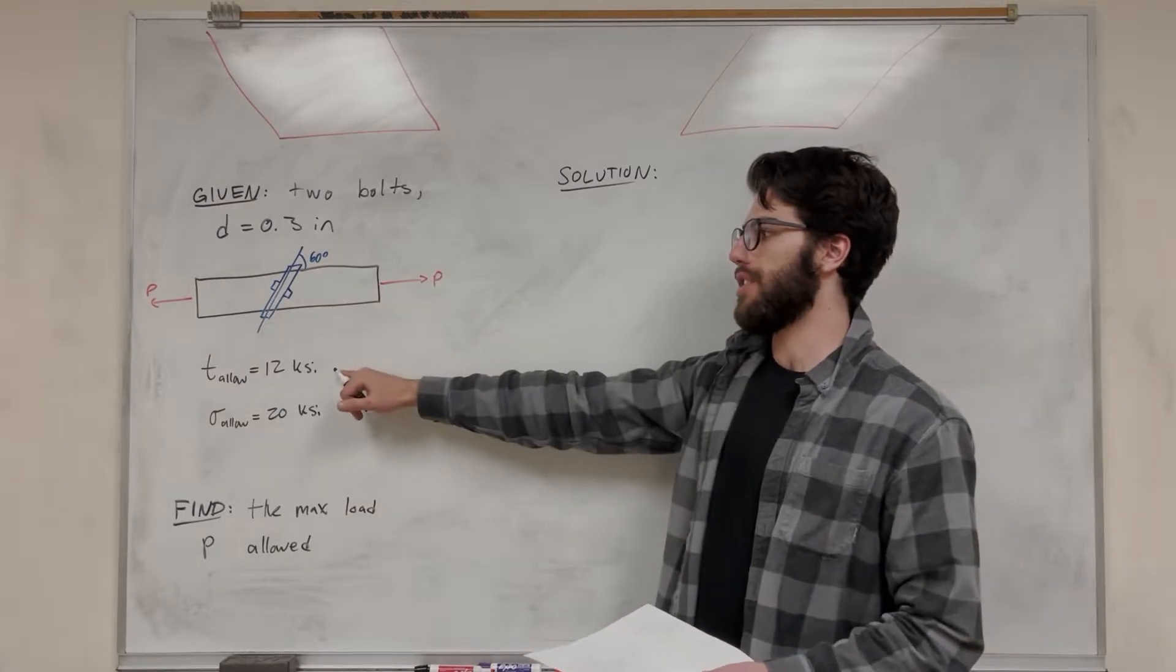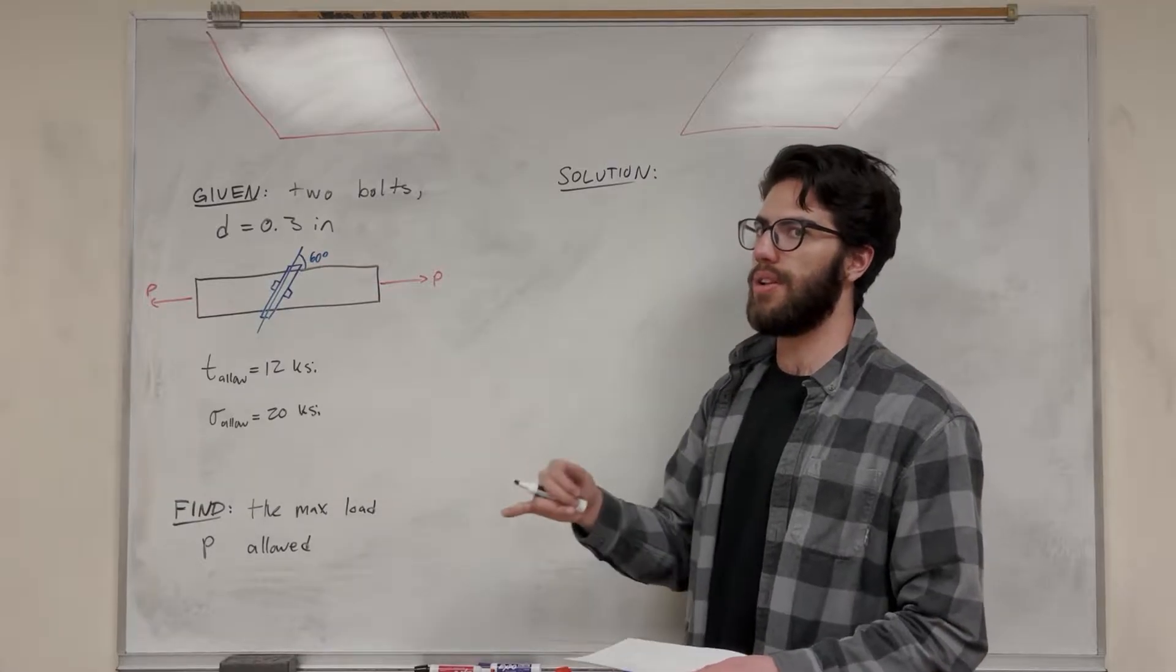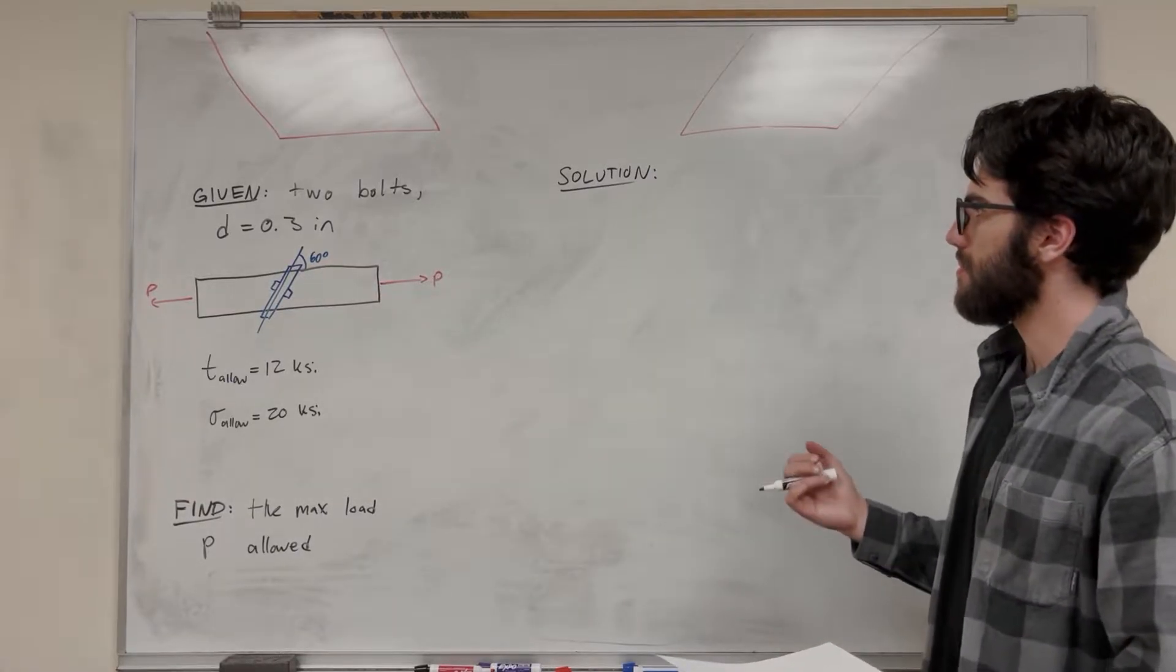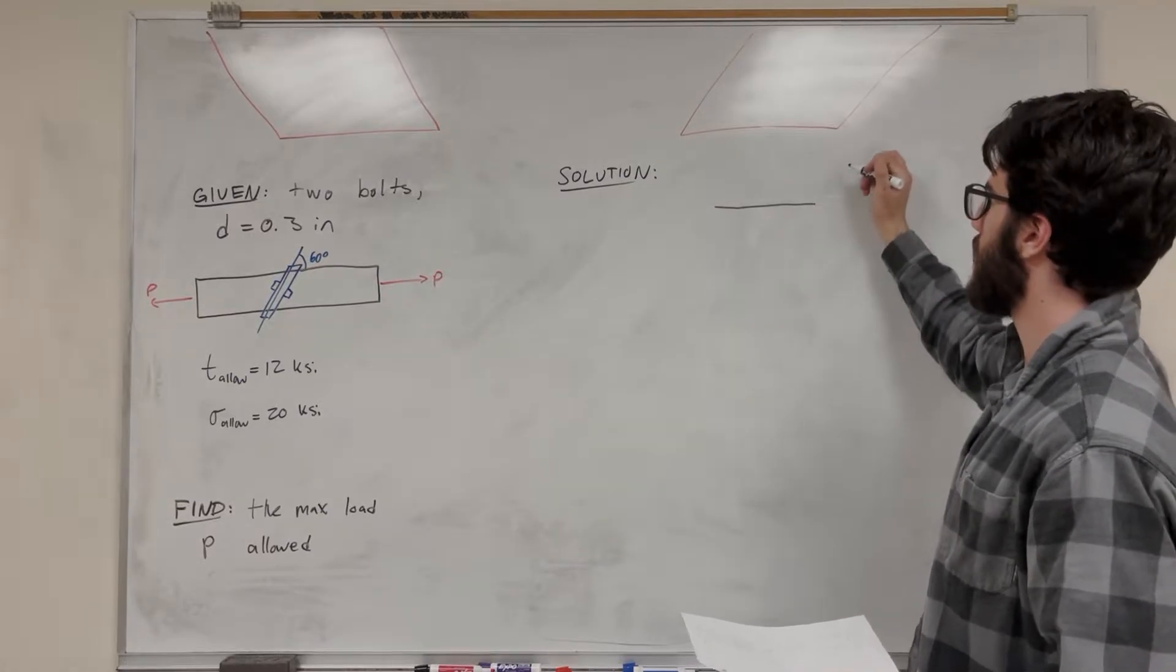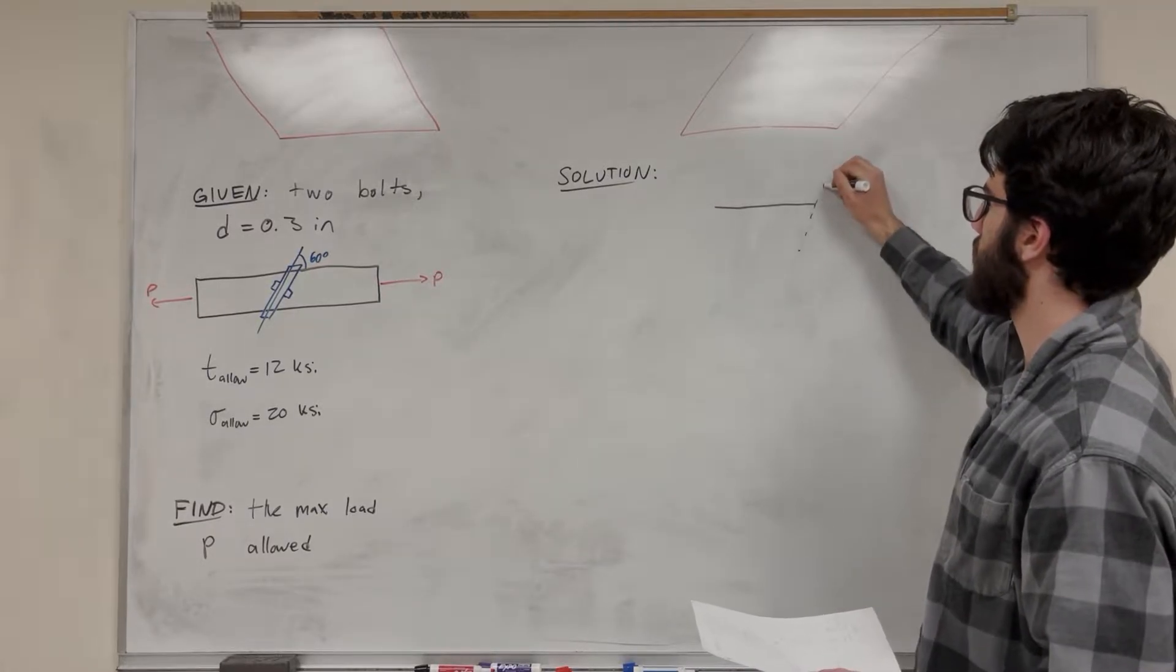So we don't know which one's going to break first. Is it going to be the shear or is it going to be the normal? That's what we need to find. So let's make a force body diagram. Let's take a cut at that 60 degree angle.